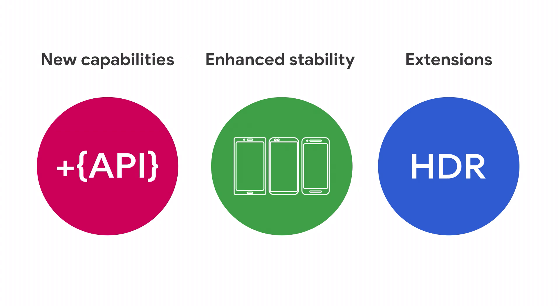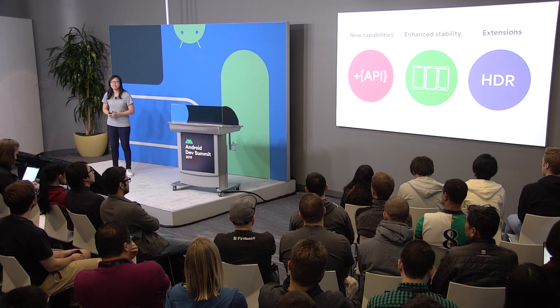We've seen a lot of excitement from developers trying to incorporate this new library into their apps, and we're really excited to tell you more about what we've been working on for the past couple of months. The team has been focusing on three major areas. The first one is adding new capabilities and new APIs so that you can build out even more features for your camera app. Second, we know everybody really cares about testing and making sure that stability and consistency are there each time you ship your app, so we worked on enhancing the stability of the library.